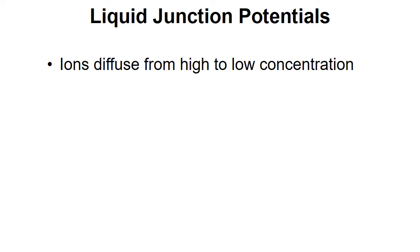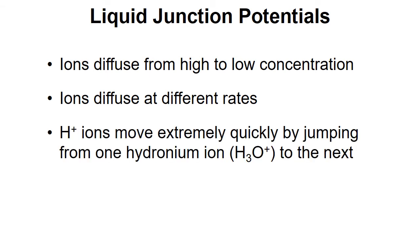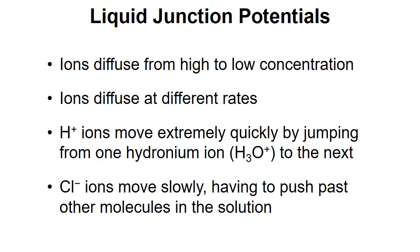Now the ions are going to diffuse from high to low concentration and they're going to diffuse at different rates. The hydrogen ions will move extremely quickly by jumping from one hydrogen ion to another, and we'll look at the mechanism of that in a moment. The chloride ions will move very slowly because they have to push past the other molecules in the solution.